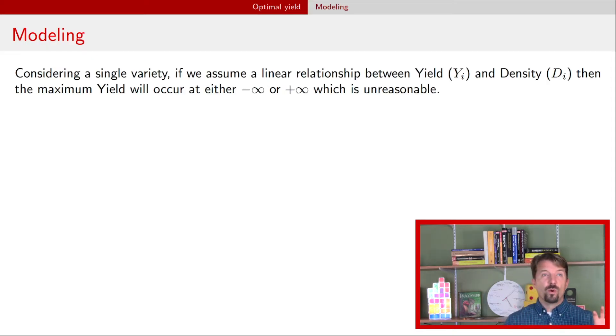And so what we're going to be thinking about is building a model that has curvature for the response variable for this explanatory variable density. If we just use the linear model for density then the only options are that we have a positive slope in which case the maximal yield is at positive infinity for density. Otherwise we could have a negative slope which indicates that our maximal yield occurs at a density of negative infinity.